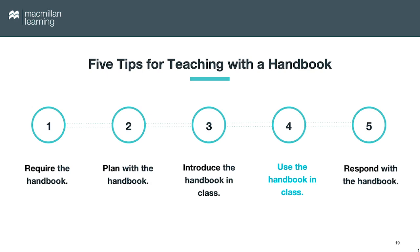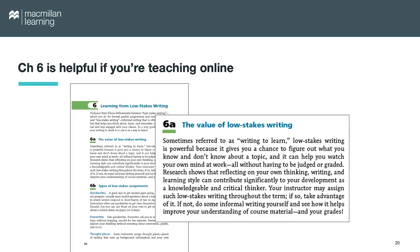Idea number four: use the handbook in class. If you're teaching online, definitely have the class read chapter six, called Learning from Low Stakes Writing. This will prepare students for the kinds of writing that show they are engaged in your online class. You might have them participate by writing occasional posts or quick writes about course topics or readings. There's a nice checklist at the end of this chapter with advice about this kind of virtual participation.